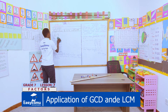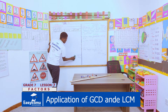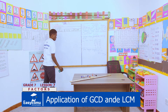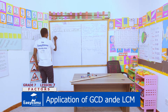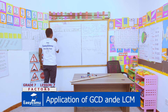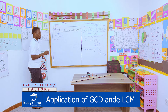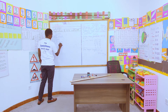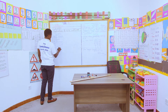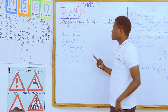Now let us discuss the application of LCM. What are the keywords that will enable you to know that you are supposed to use the concept of LCM? We have words like 'smallest,' 'shortest,' 'lowest,' and 'thinnest' — anything that implies something smaller means you're supposed to use the concept of LCM to solve that question.